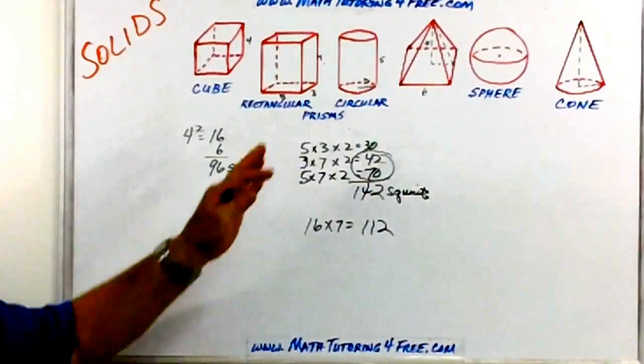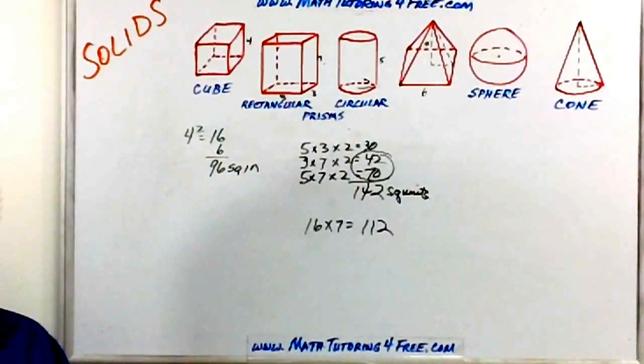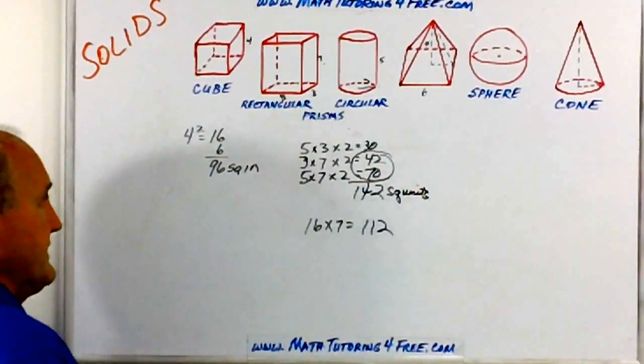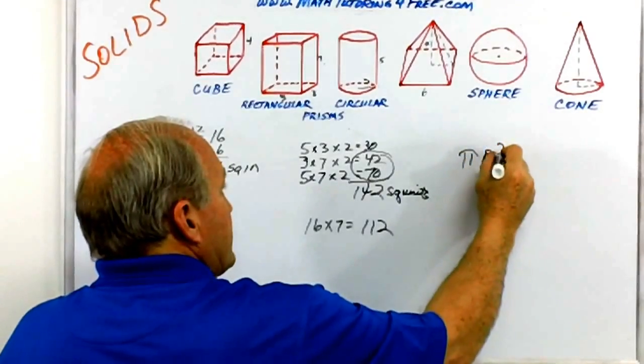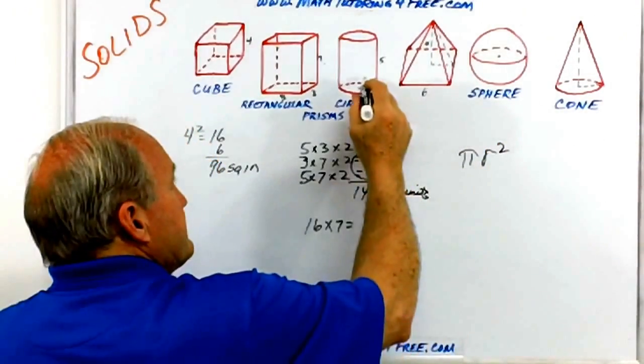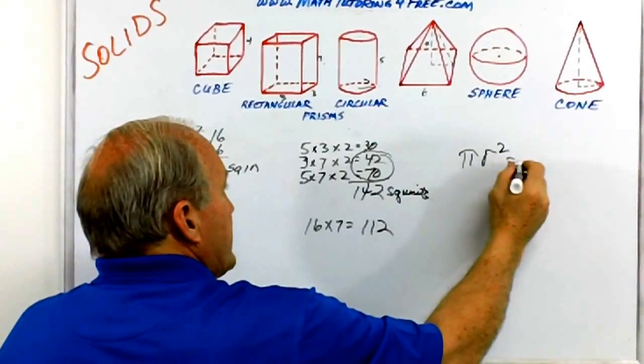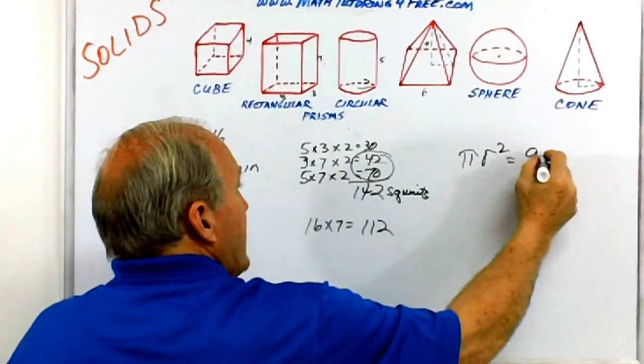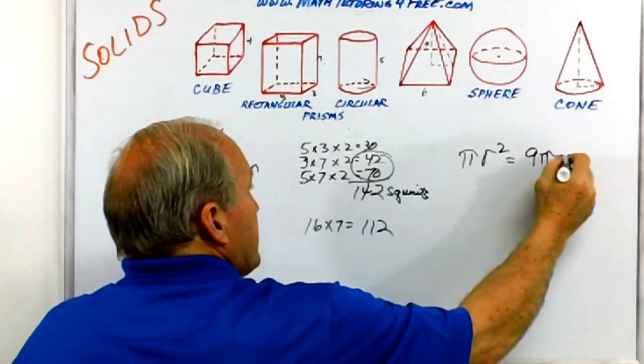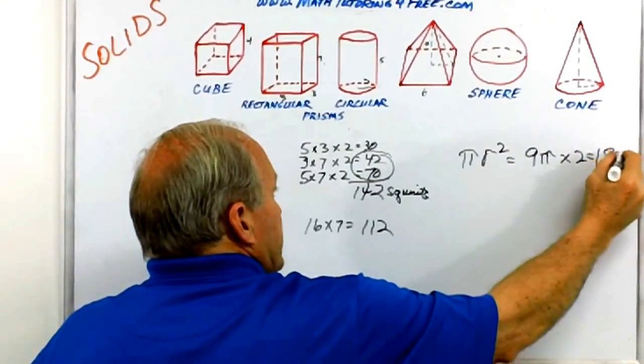Circular prism, top and bottom are not rectangles, they're circles. So we know how to find the area of a circle is pi r squared. In this case, we're saying r is three, so the bottom would be nine pi. And again, the top is two of those, so we have the top and bottom is 18 pi.